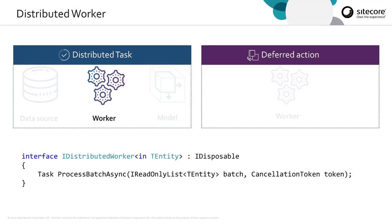We also have the distributed worker. Here's the interface. You'll note that this is also a generic interface, and the generic type here should match the type of the data source, so that we know the type of the entity that we're accepting for work. We've got one method here, processBatchAsync. It is expected that the data source will be returning elements in batches, so we can distribute each batch to a different worker.